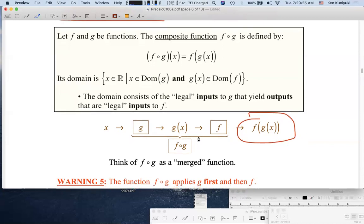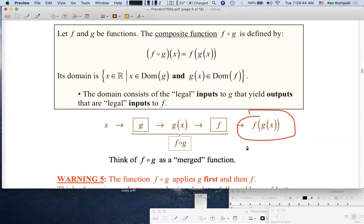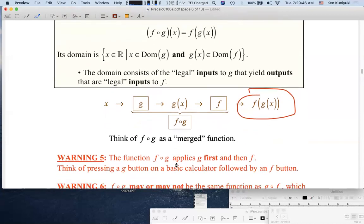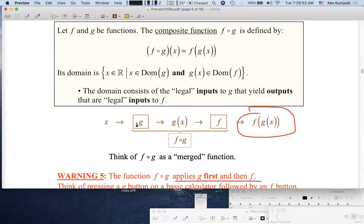Now consider merging these two calculator buttons together as a single button or function f circle g, a calculator button that first applies the g function and then the f function. We go right to left in the same way that we go inside out with parentheses. So remember, the function f circle g applies g first and then f. You press the g button first, take the output, and then press the f button.